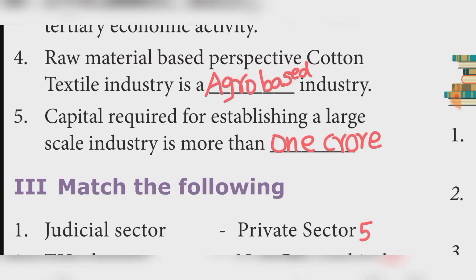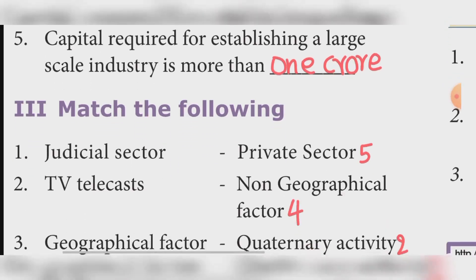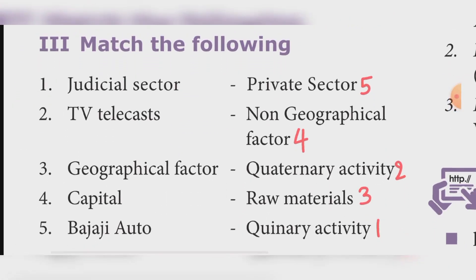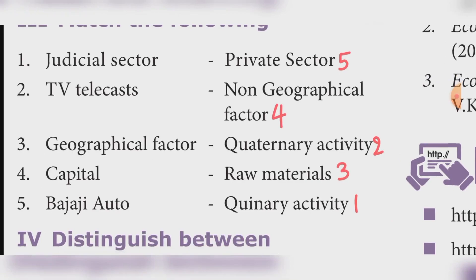Match the following. Judicial sector — Quaternary activity. TV telecast — Quaternary activity. Geographical factor — Raw materials. Capital — Non-geographical factor. Bajaj Auto — Private sector.